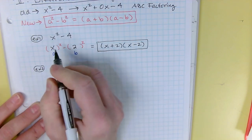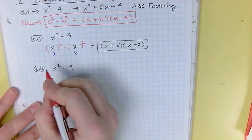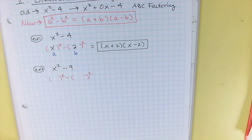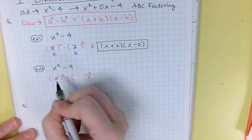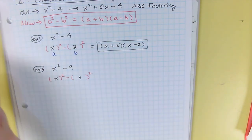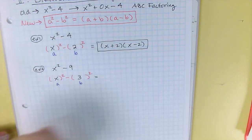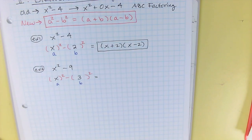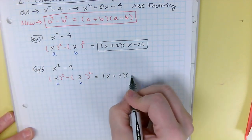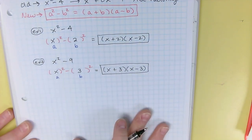Another example: x squared minus 9. Can you write this as something squared minus something squared? X times X is x squared, and 3 times 3 is 9, so that's a 3 squared. My A is X, my B is 3. Using the pattern, it factors into (X plus 3)(X minus 3). That is factored.